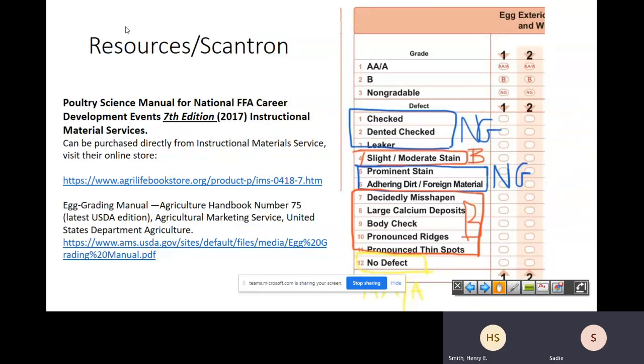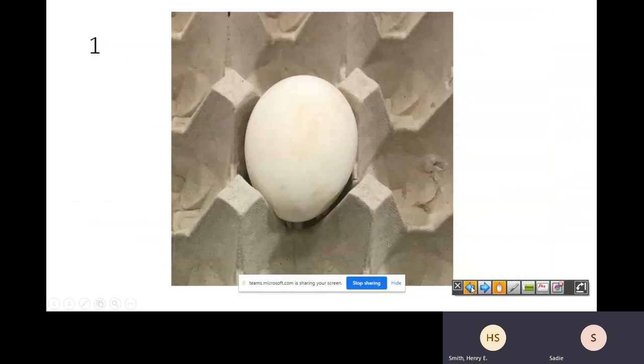Then I also get questions about pronounced thin spots. What makes it a thin spot? Sometimes you'll have eggs that have windows, little bitty windows, pinhead size all around the egg, but a pronounced thin spot is going to be bigger than the size of a pencil eraser, actually a little larger than that. That's when it's one solid spot. That's what's going to look like a pronounced thin spot. And then of course we have no defect. Remind your students, if it's no defect, make sure you mark it a double AA and make sure you bubble in no defect. Don't forget either one of those.